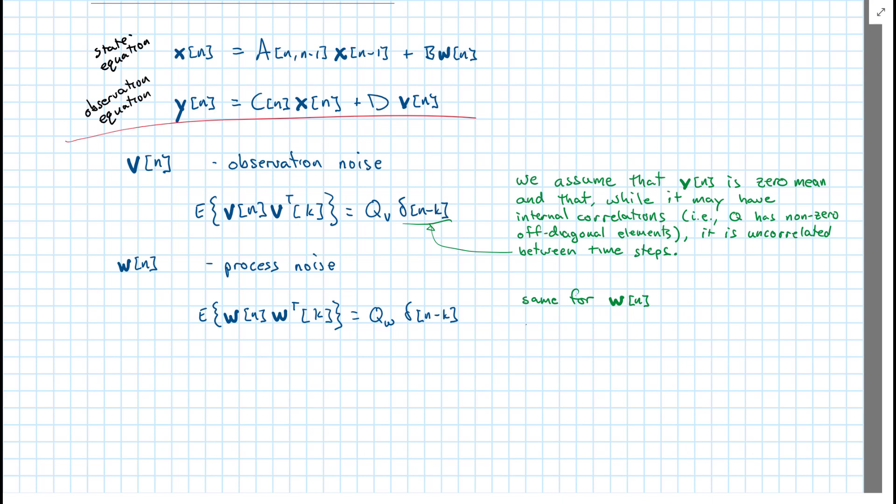we can also note that the expected value of V times W transpose is going to be zero for all possible shifts. So since they're zero mean, this implies that they're uncorrelated.